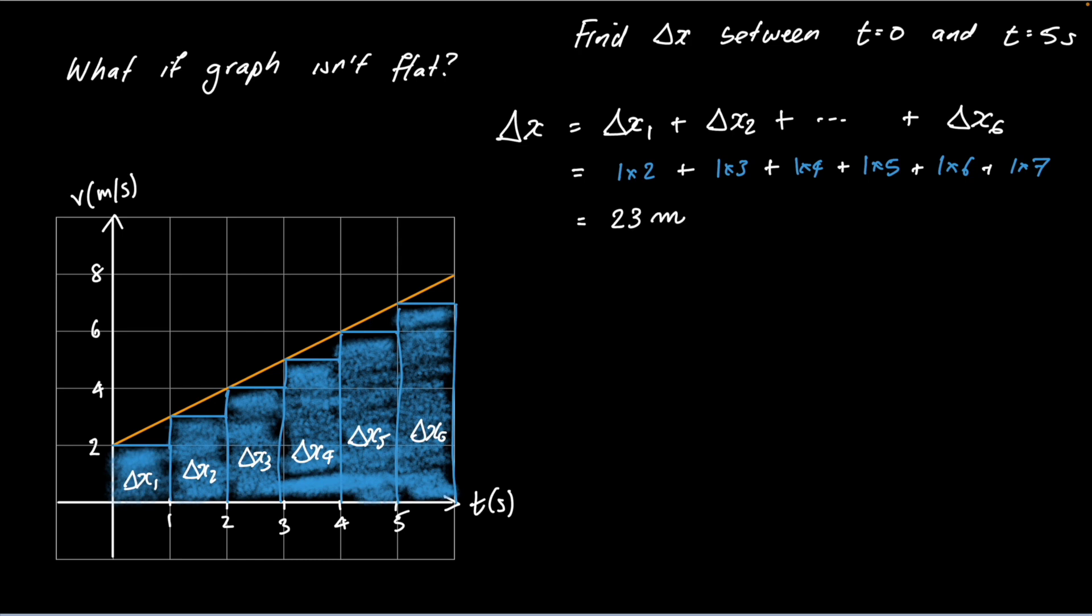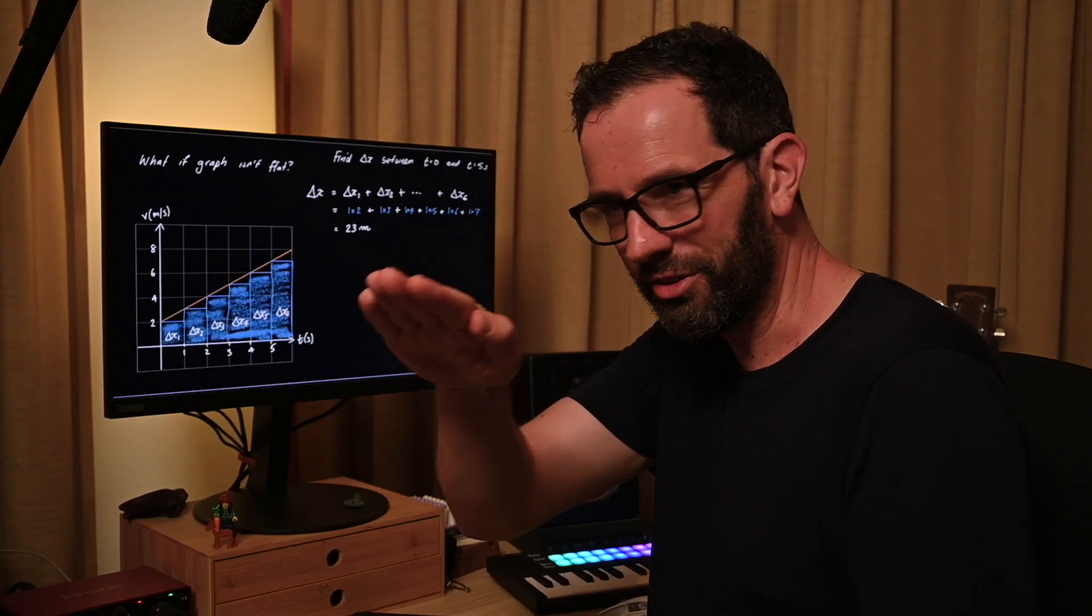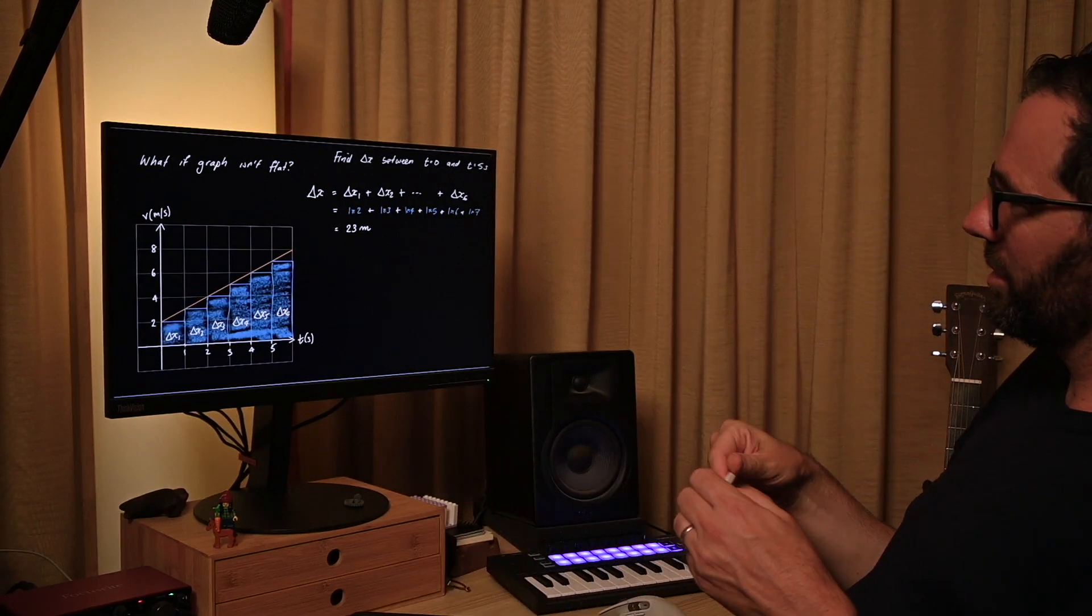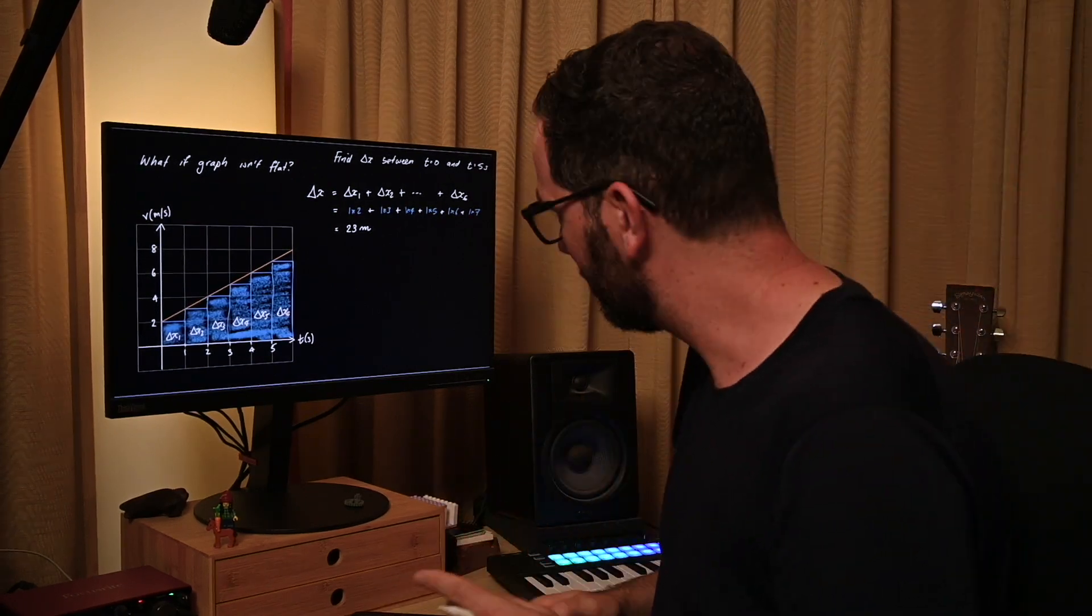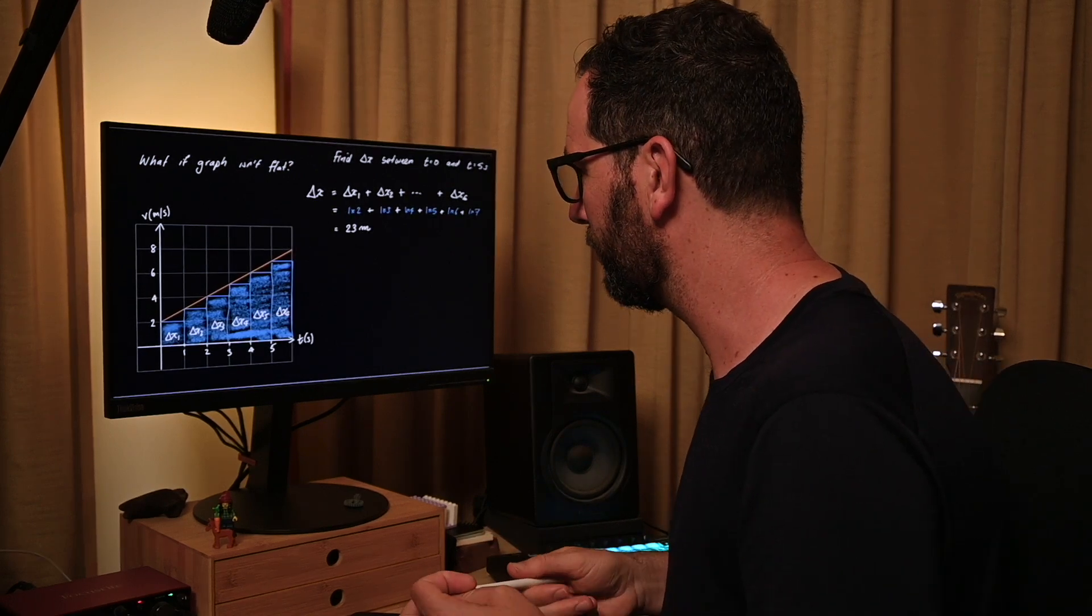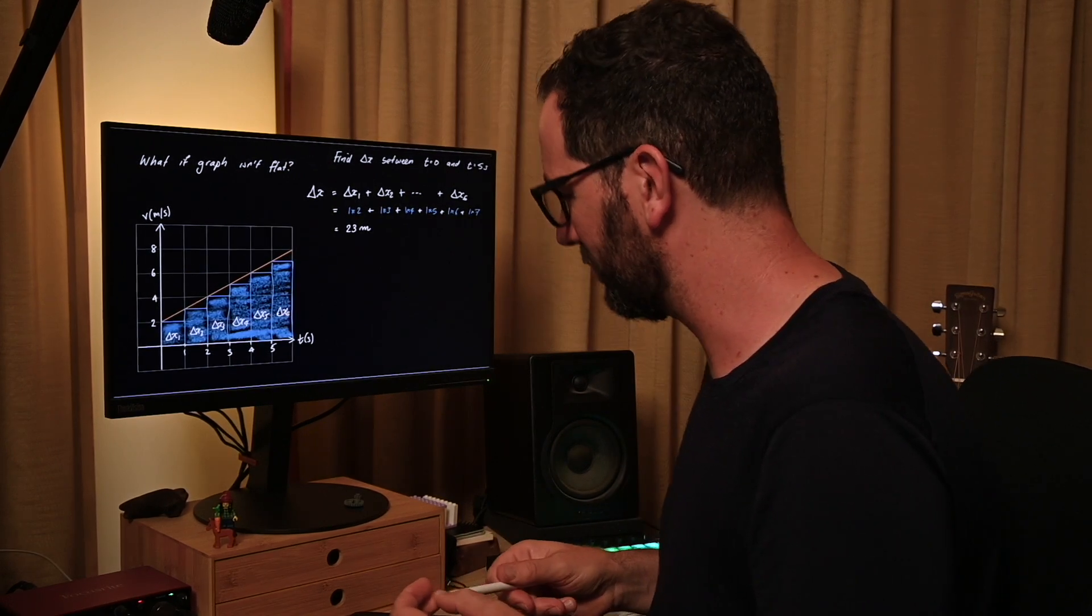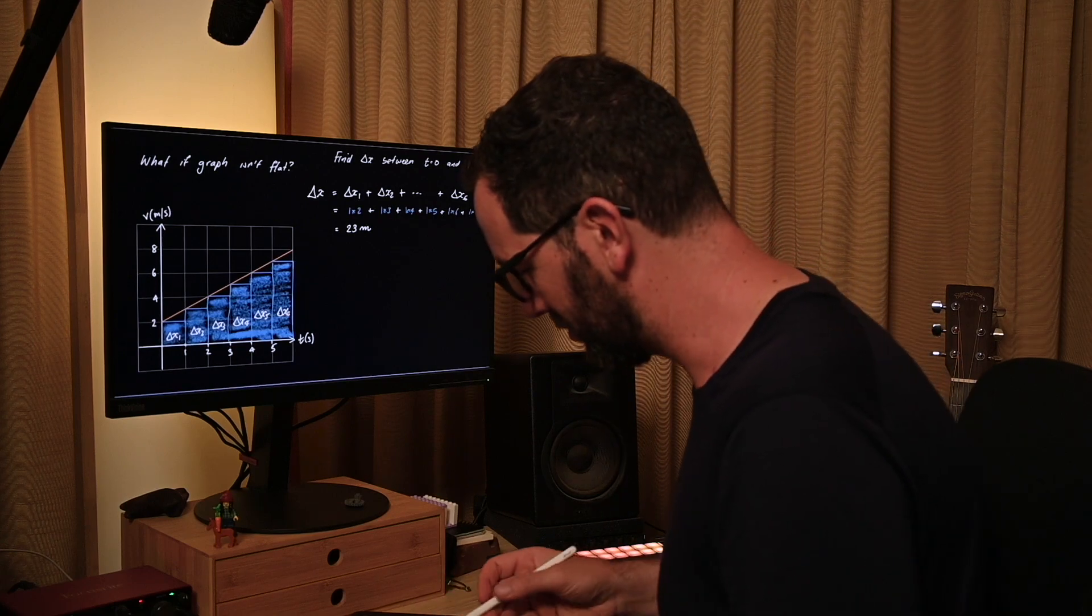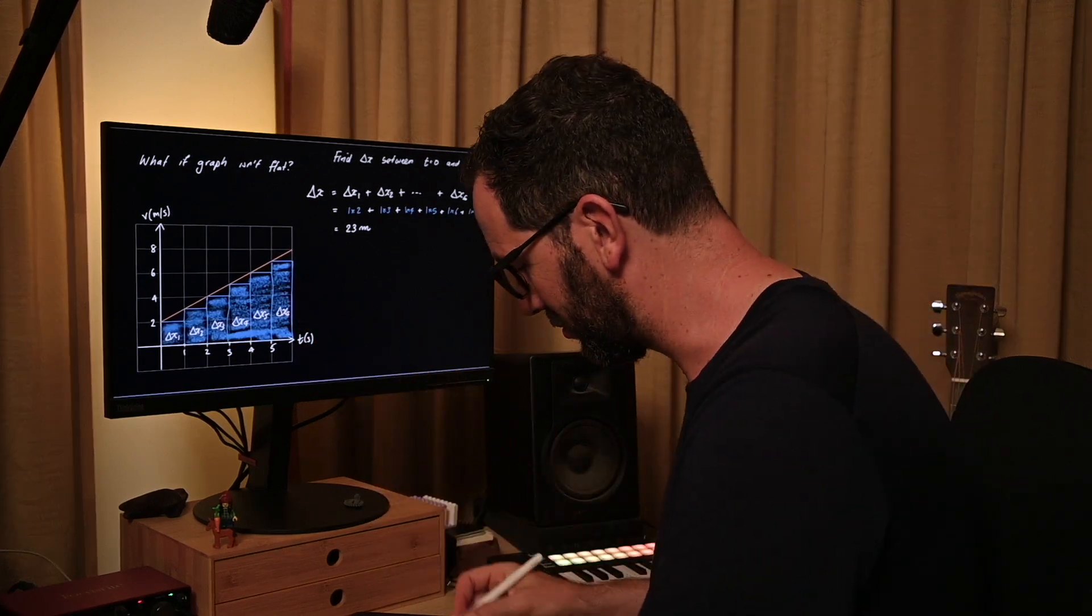For my approximate velocity-time graph where I'm assuming the velocity stays constant each second and then jumps up when we get to the next second, you might be okay, that's not 100% convincing. If our velocity just was that graph then fine, but actually our velocity is not a staircase, it is a straight line.